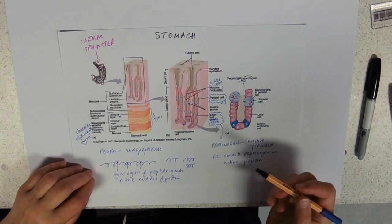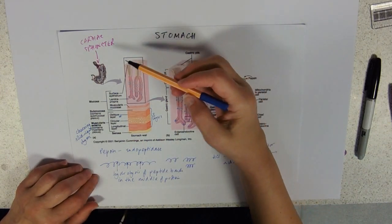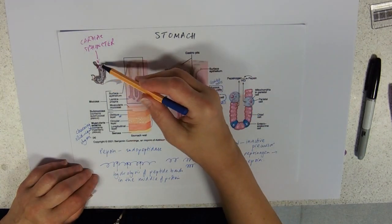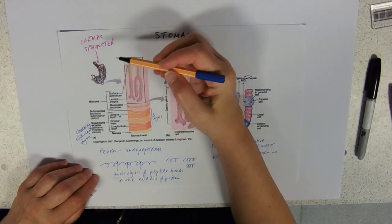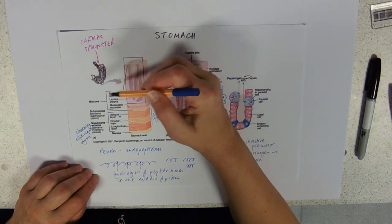What that produces is lots of shorter polypeptides. If you think about it—well, let's not think about vomit—but the smell of vomit is these shorter polypeptides. You're only ever sick from your stomach.